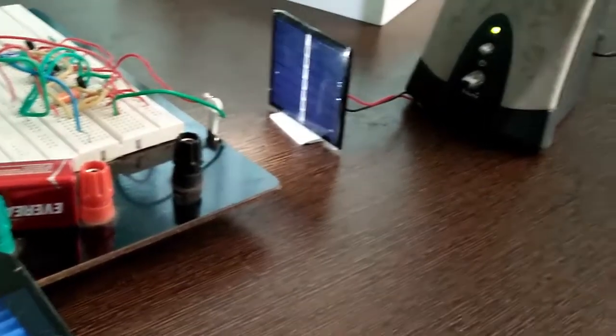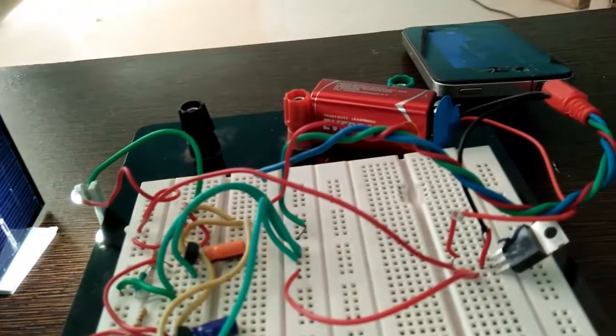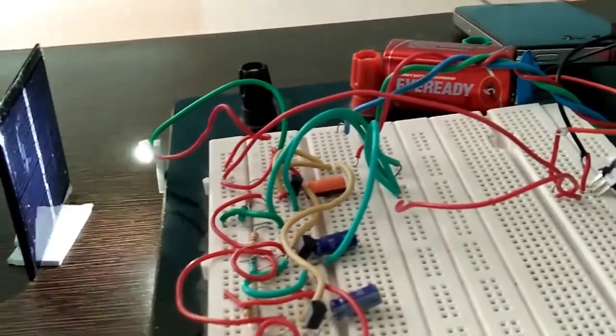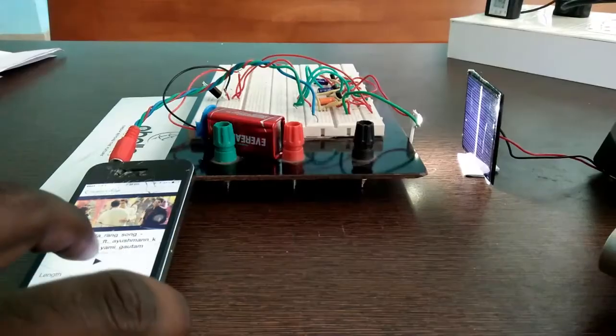The prototype can stream audio through light. The main circuit converts the electrical signal into light using the LED, and the photo diode receives the light signal and converts it back into electrical signal so that we can hear it through the speakers.